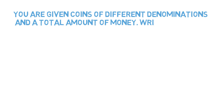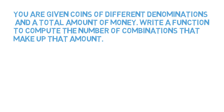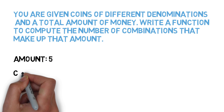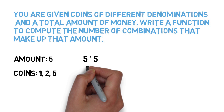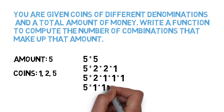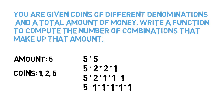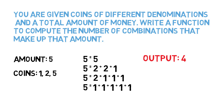You were given coins of different denominations and a total amount of money. Write a function to compute the number of combinations that make up that amount. You'll be given two parameters: an amount and an array of coins. In this example we have an amount of five and the coins one, two, five. The different combinations are a single five cent coin, two plus two plus one, two plus one plus one plus one, and one plus one plus one plus one plus one — giving us an output of four.